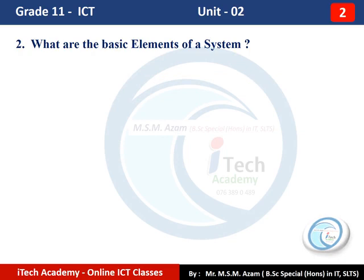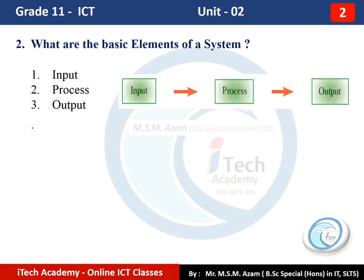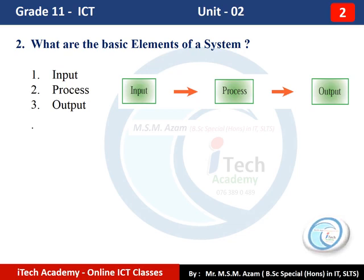Question Number 2: What are the basic elements of a system? The answer is input, process, and output. If we take any natural or artificial systems, they have three basic elements: input, process, and output.